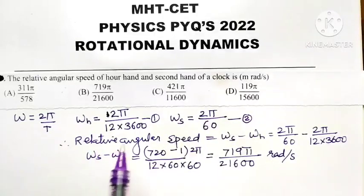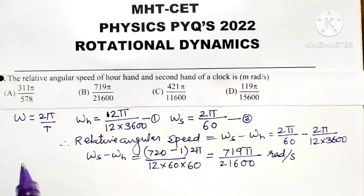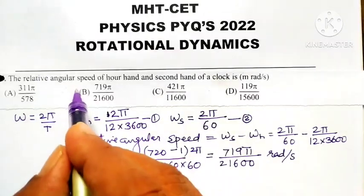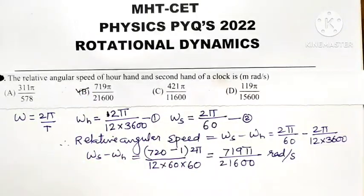So out of 4 options, which option is correct? Option number B is the correct option. Option number B is 719π divided by 21600.